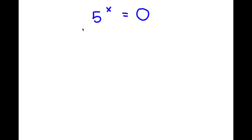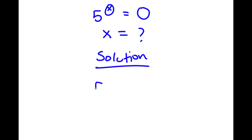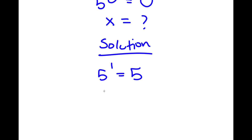In this problem I have 5 to the power of 5 to the power of x is equal to 0. I obviously want to find the value of x. I'm going to start by trying out values of x. If I have 5 to the power of 1, this is equal to 5. If I have 5 to the power of 0, well any number to the power of 0 is 1.